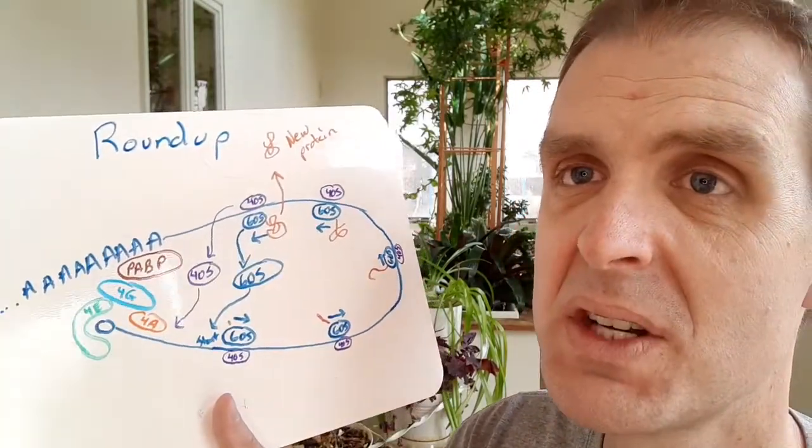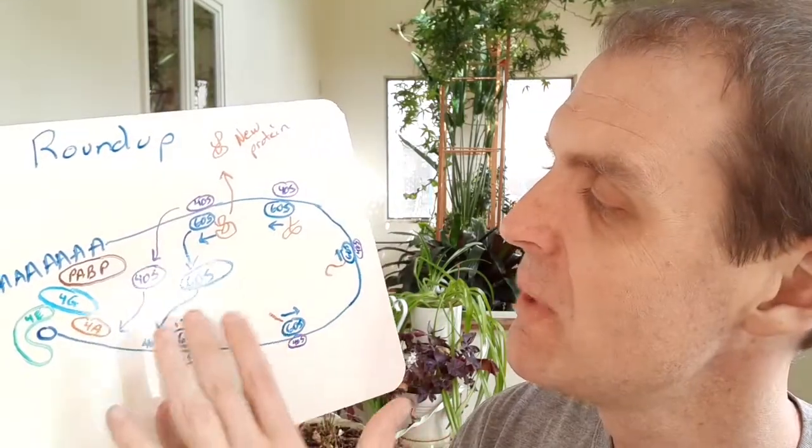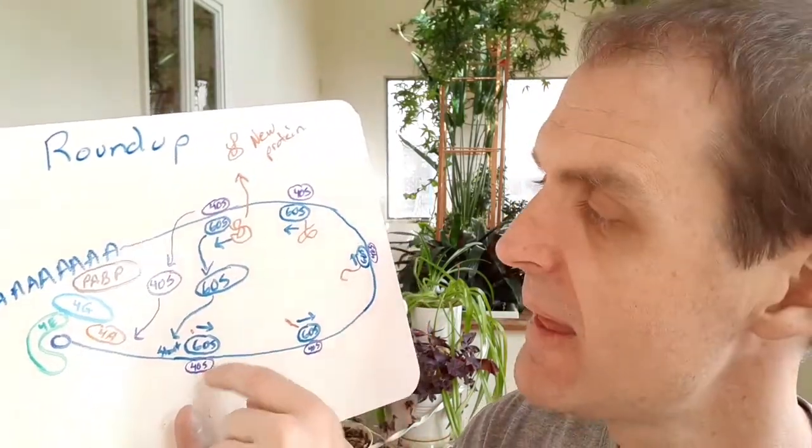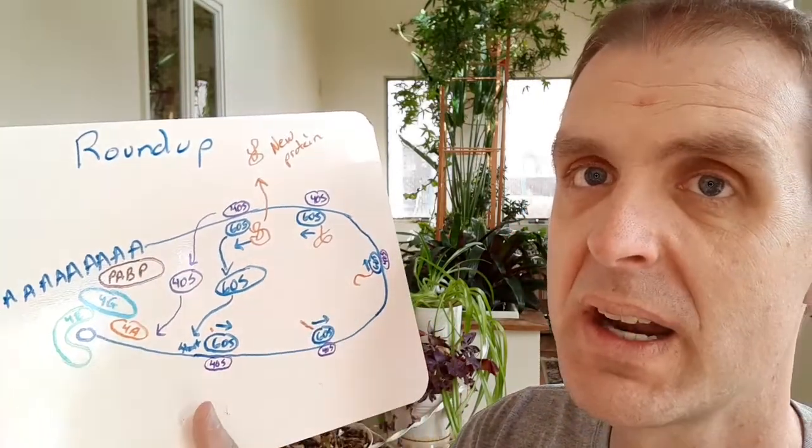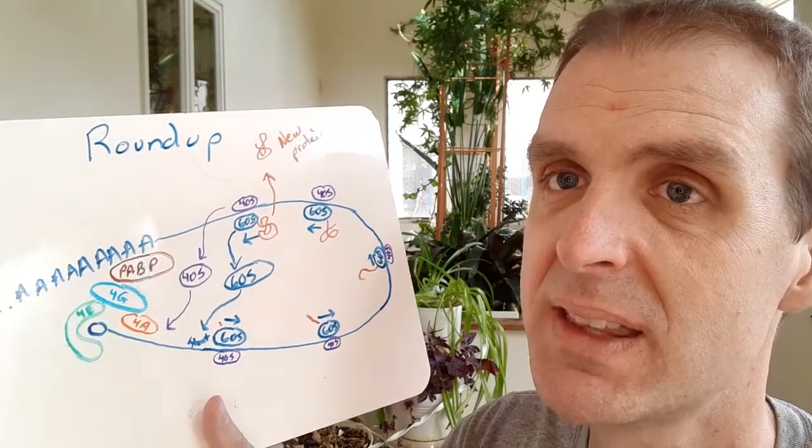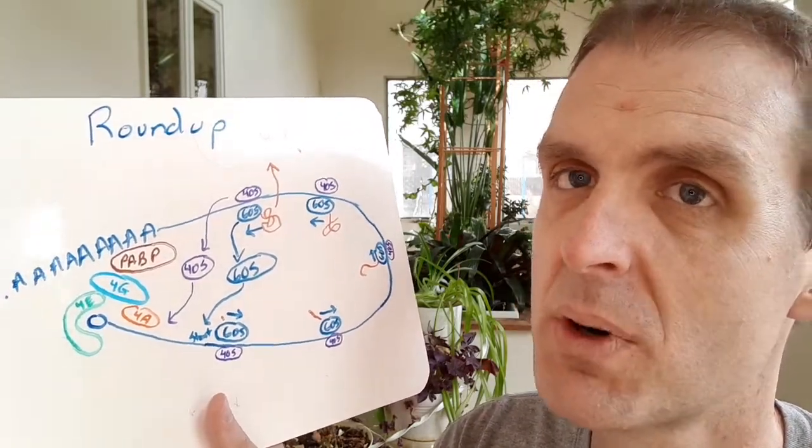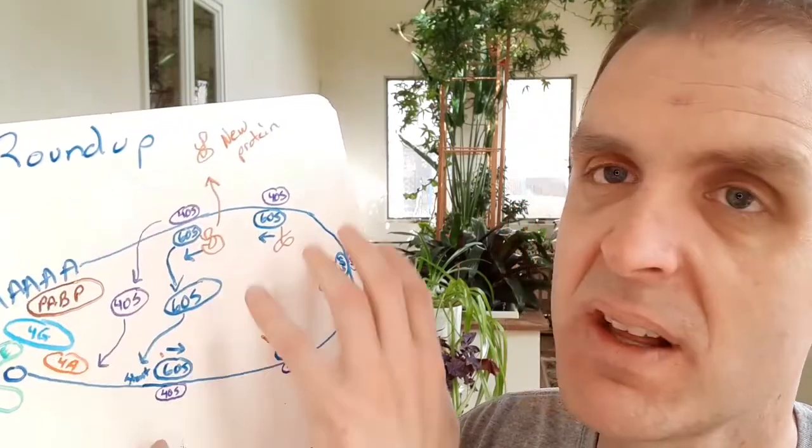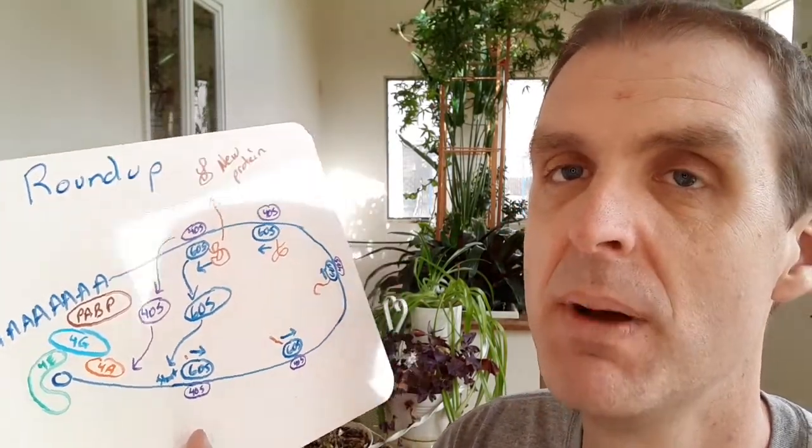One more piece of terminology just to throw in because I can't help myself. When you have an mRNA that has multiple ribosomes currently working on it, it means that the translation efficiency was high and we have a special word for the mRNA plus all those ribosomes stuck to it. That is called a polysome. Poly means many, some is short for ribosome.